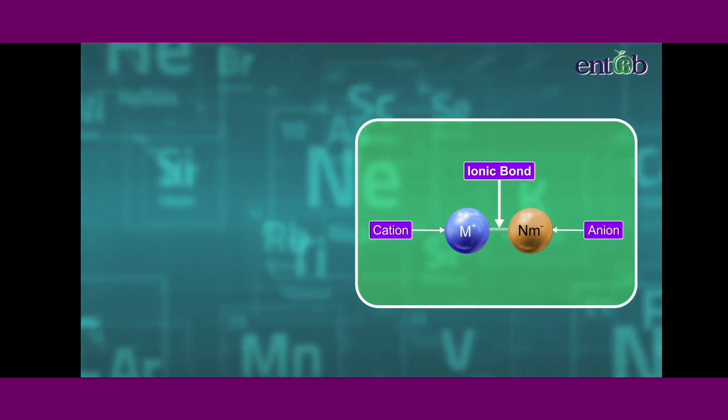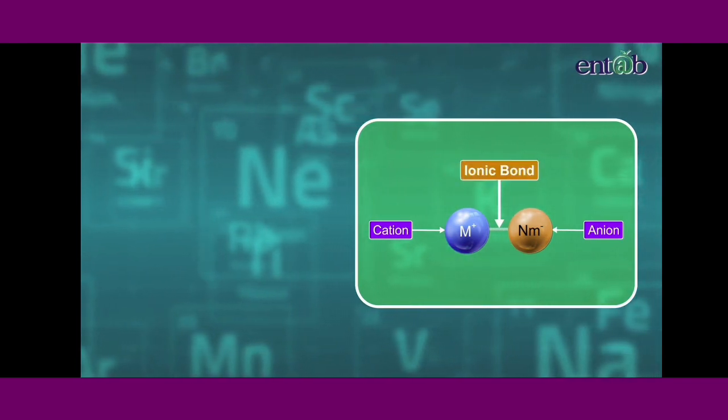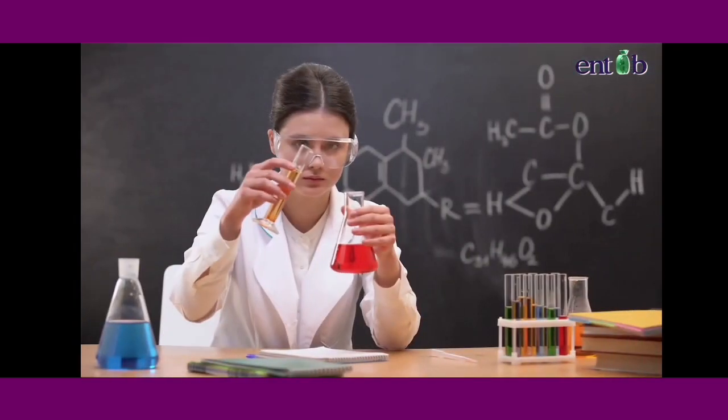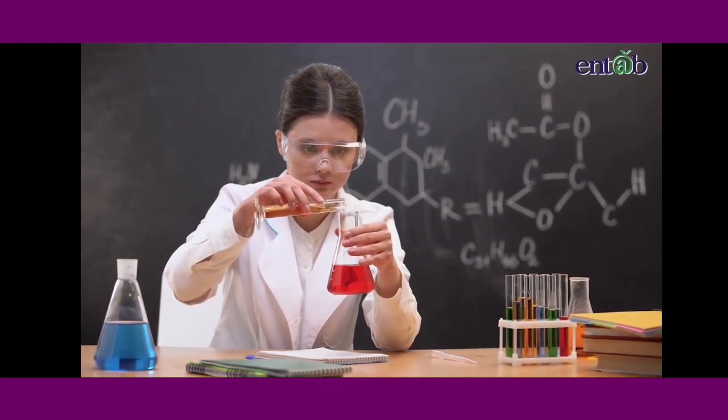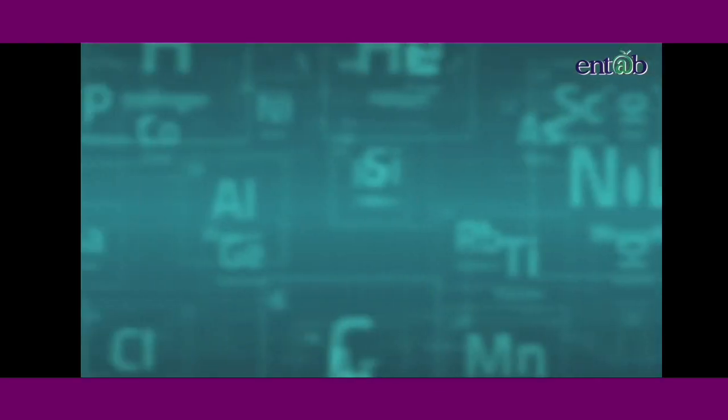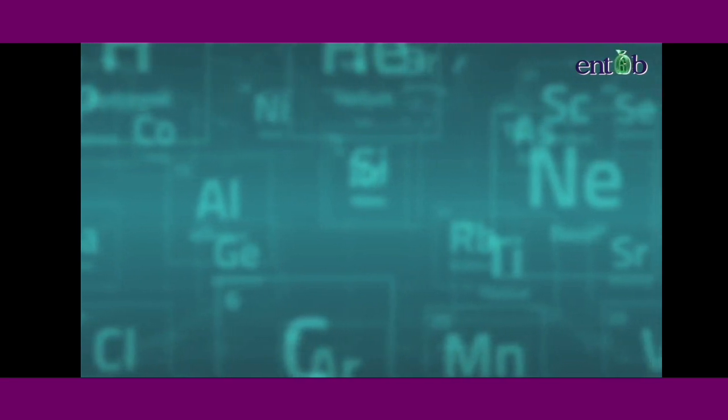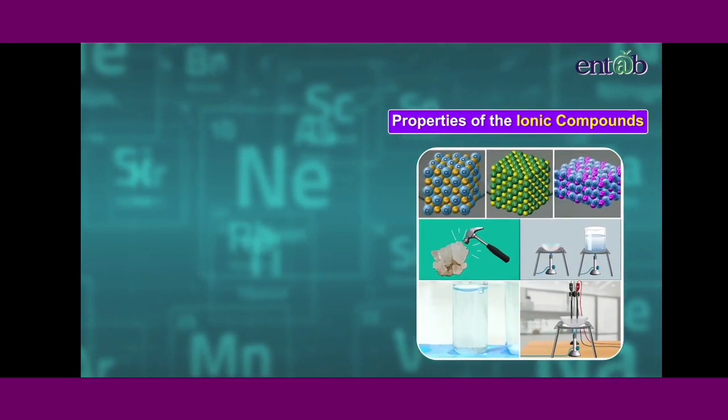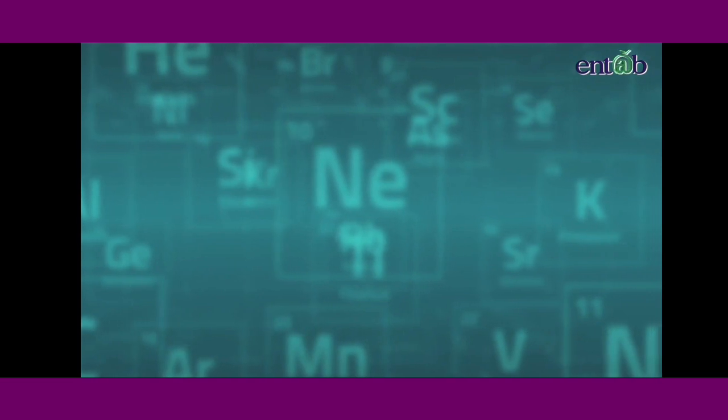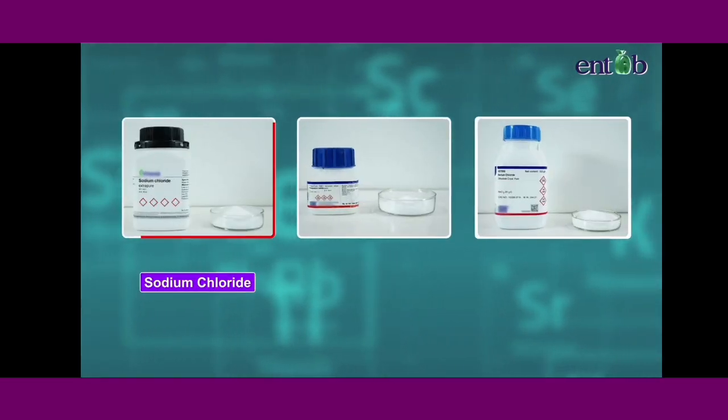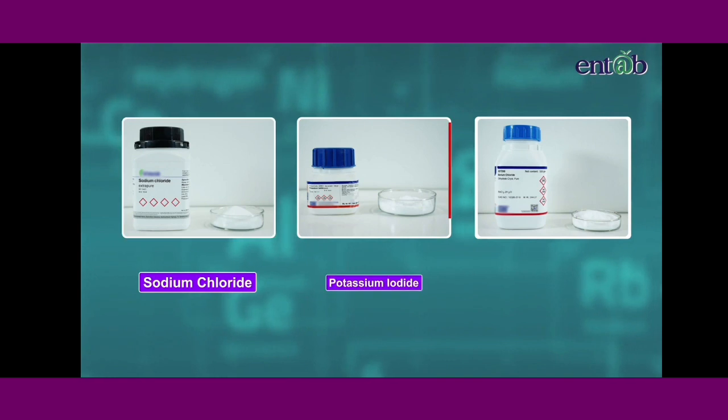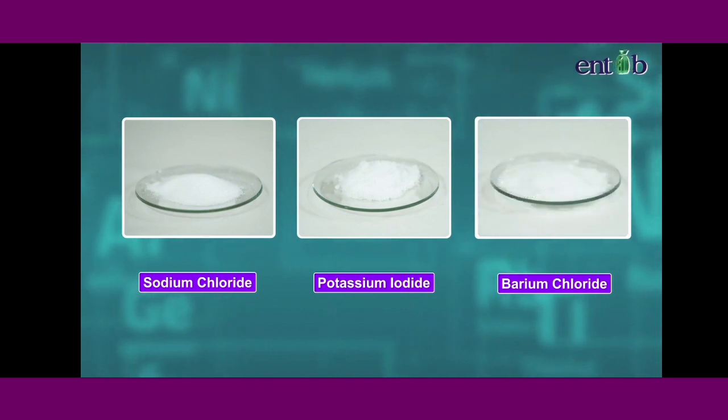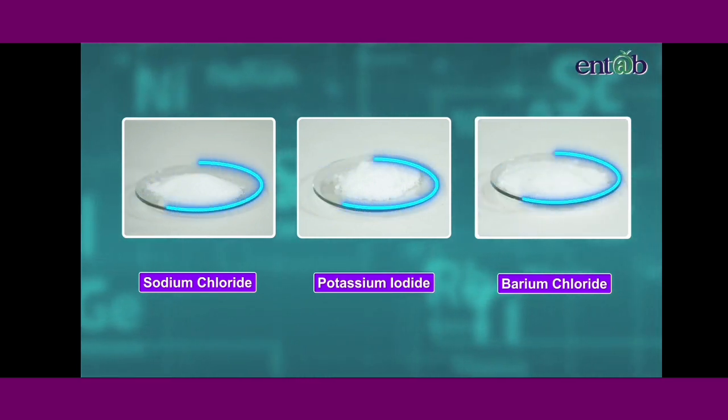Now that we have understood what is an ionic bond, we shall learn its important properties. Following the mantra of learning by doing, let us perform an activity that will help us in learning about the properties of ionic compounds. Let us take samples of three salts, namely sodium chloride, potassium iodide, and barium chloride and place them on three watch glasses respectively.